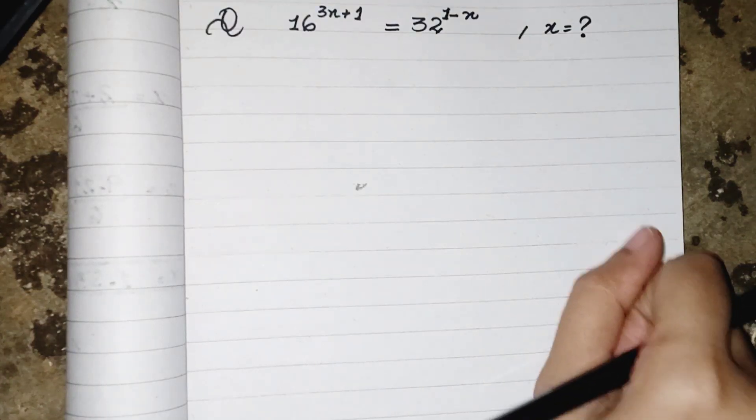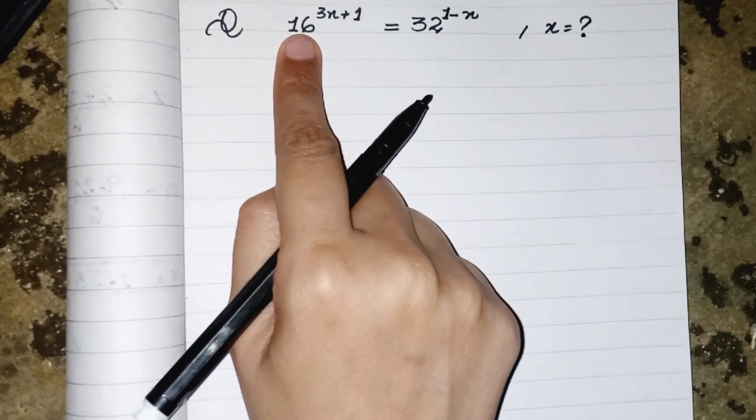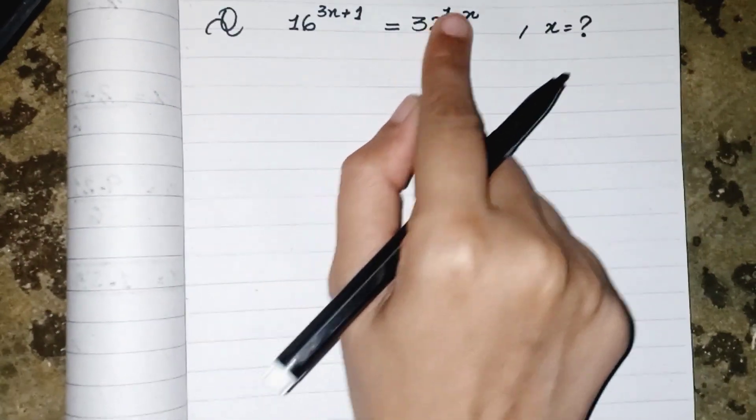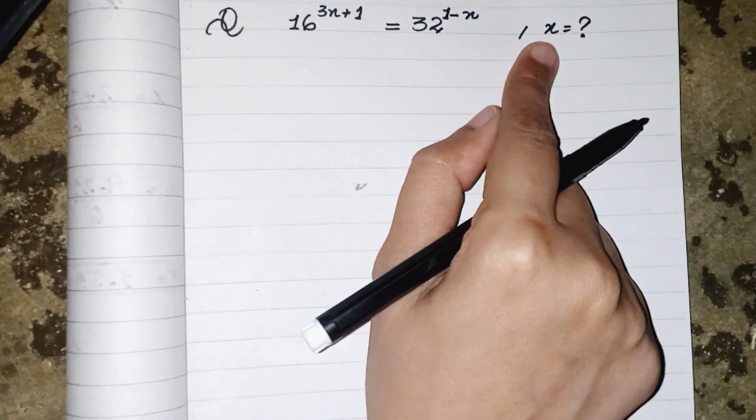Hello everyone, in today's video we have to find the value of x where our equation is 16 power 3x plus 1 equals to 32 power 1 minus x. So we have to find the value of x which is in exponent form.